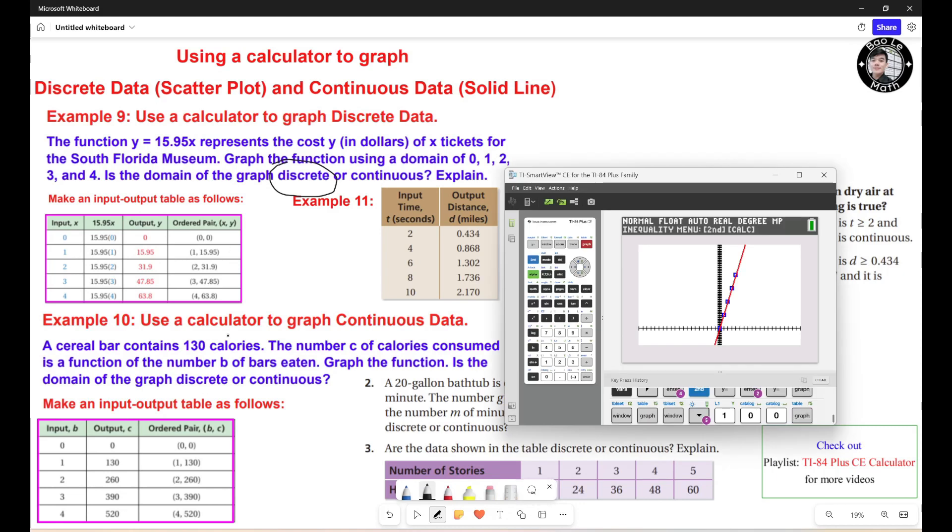Let's move on to example number 10. Now, we do the same process. A cereal bar contains 130 calories. Number C of calories consumed is a function of the number B of bars eaten. Graph the function. Is the domain of the graph discrete or continuous?